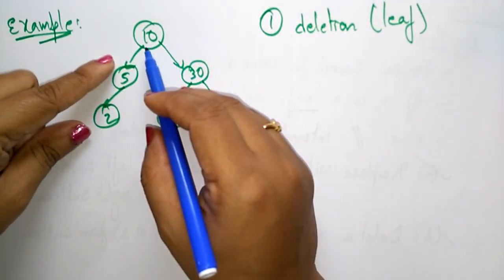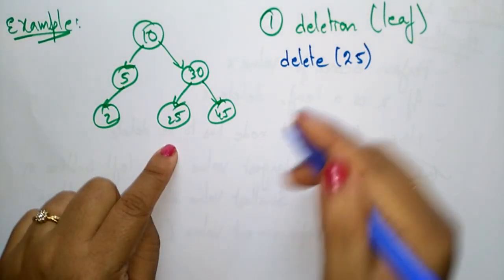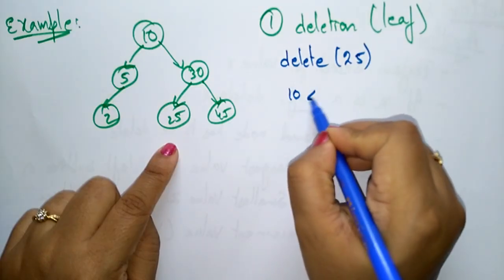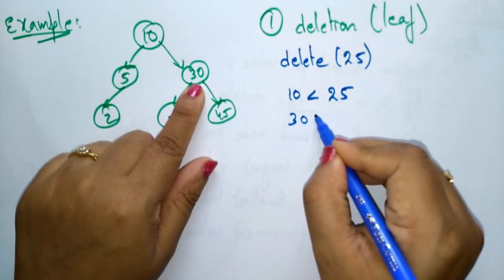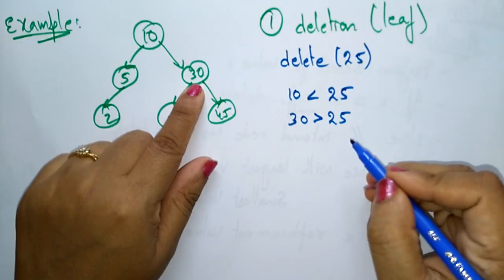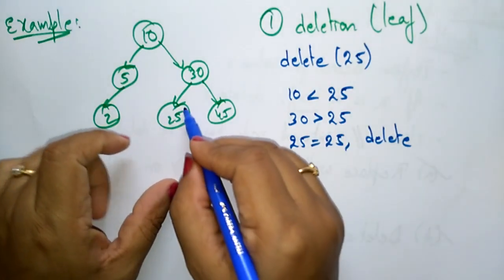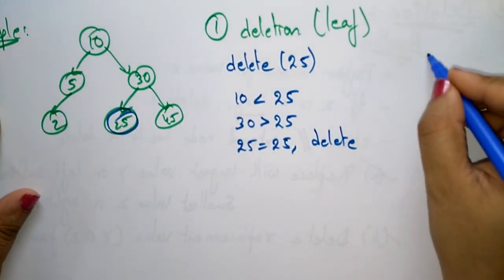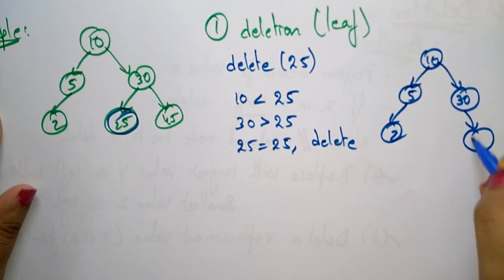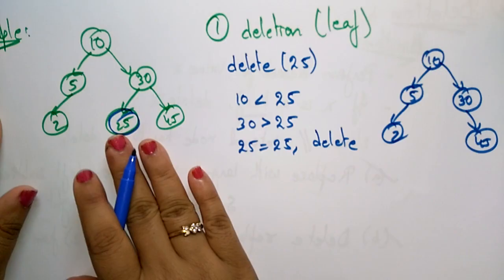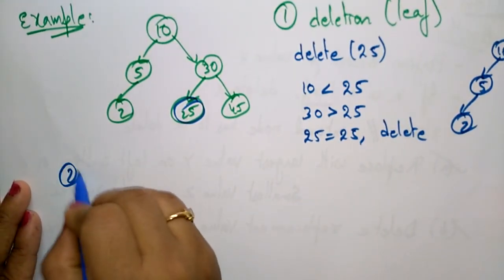Suppose I want to delete 25. First check: 25 is a leaf node. 10 is less than 25, so go right. 30 is greater than 25, so 25 is on the left of 30. When 25 equals 25, perform the deletion. The new tree is: 10, 5, 2, 30, 45. If the leaf node is the deleted element, you can directly delete it without any further operation.